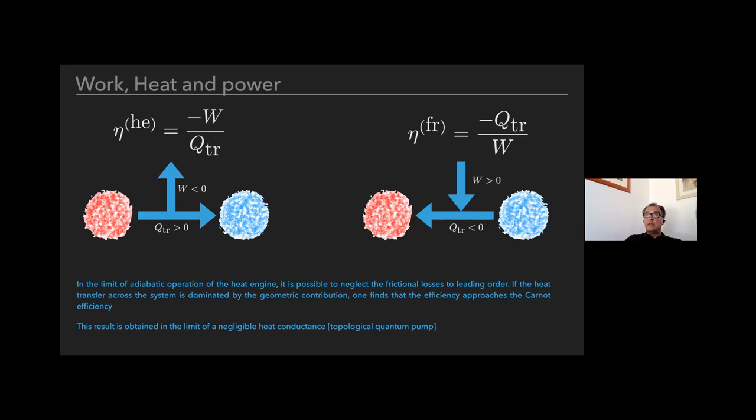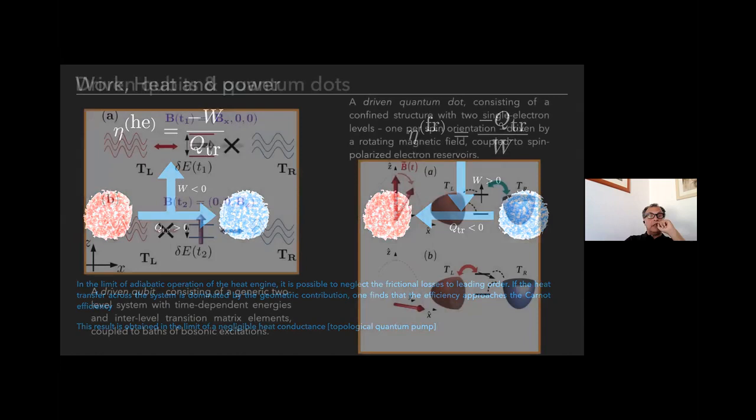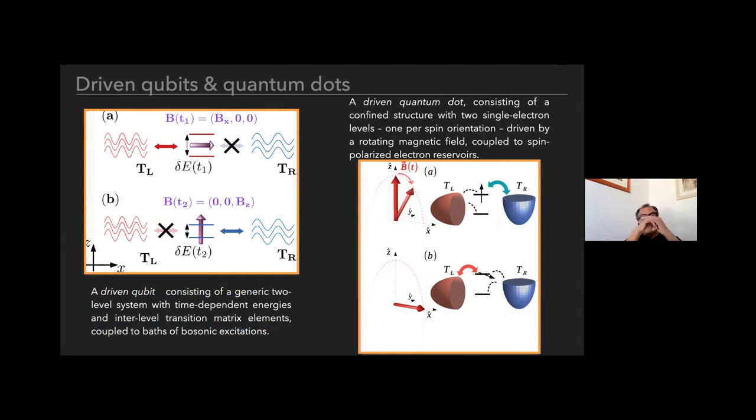In the limit of adiabatic operation, from the previous expression it's possible to drop out the losses because they scale like omega in the first approximation. If the transport heat is dominated by the geometric term, meaning that the thermal conductance is zero or very low in this regard, then one ends in an efficiency which is very natural. We expect that in this limit the geometric component will give back Carnot efficiency, and corrections either come from the losses or from finite thermal conductance.